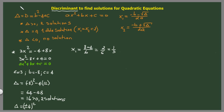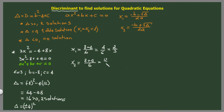Pardon me — I went a little fast. It is 4 here, not 2. So we have 4 divided by 6, which equals 2 thirds. That's our first solution. And the second one will be 8 plus 4 — with the opposite sign — divided by 6, that's 12 over 6, which equals 2. So the solution to our equation is therefore 2/3 and 2.